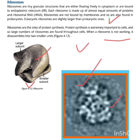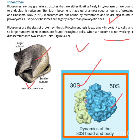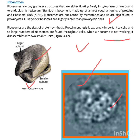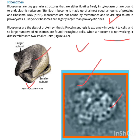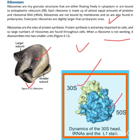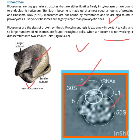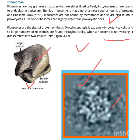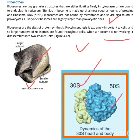The word ribosome — 'ribo' refers to ribonucleic acid. Ribosomes are different from most organelles in that they are not surrounded by a protective membrane.